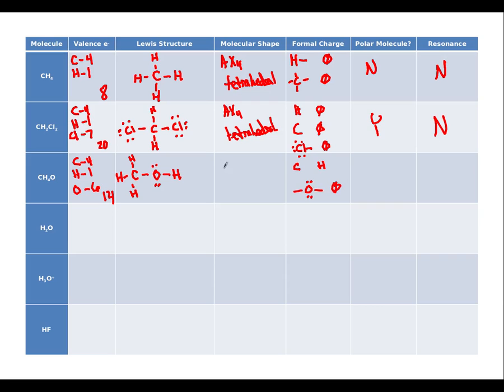Now we kind of have two shapes here. Around the carbon, it's still AX4, tetrahedral. Eh, ran out of space. Around the O, it's AX2E2, and that is bent. Simply because we have an AX2E2 molecule, this is a polar molecule. There's no way that that bent would ever cancel out. Still no resonance because there's no double bonds.